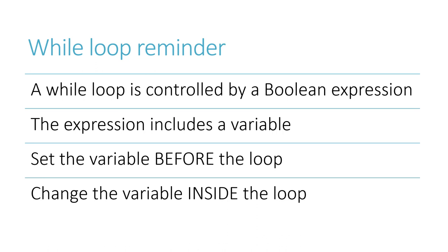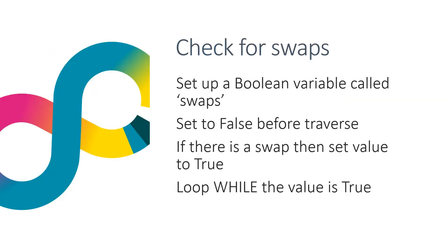So with all that in mind, how are we going to use that to control the bubble sort? So how would we apply this in the case of the bubble sort? Well, we need to create a Boolean variable called swap, which would be false.